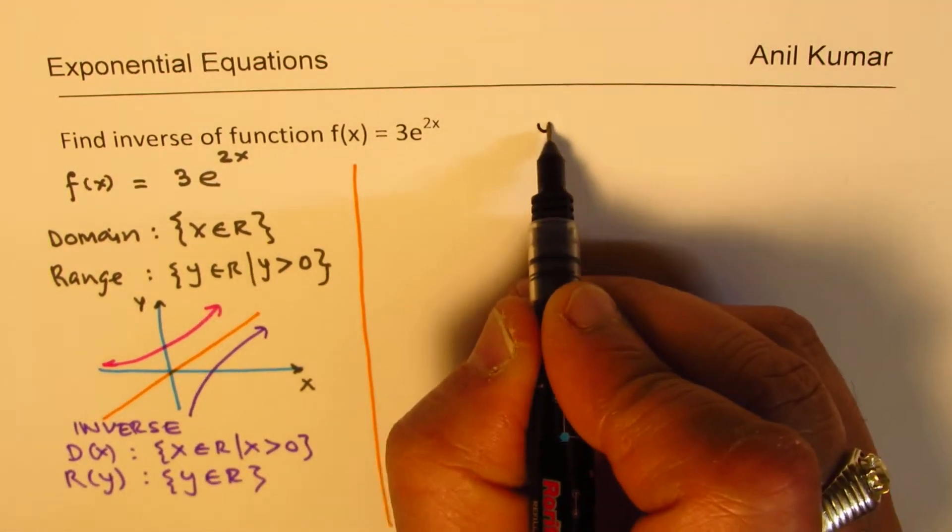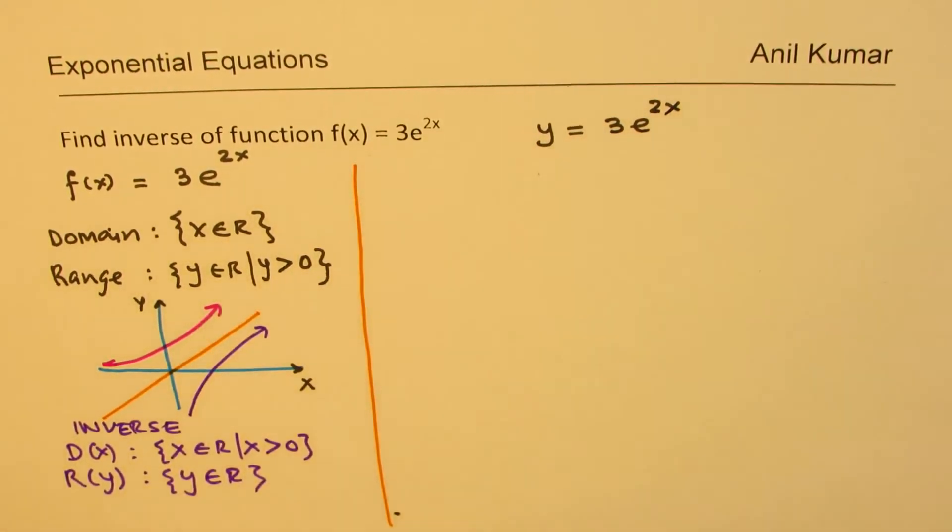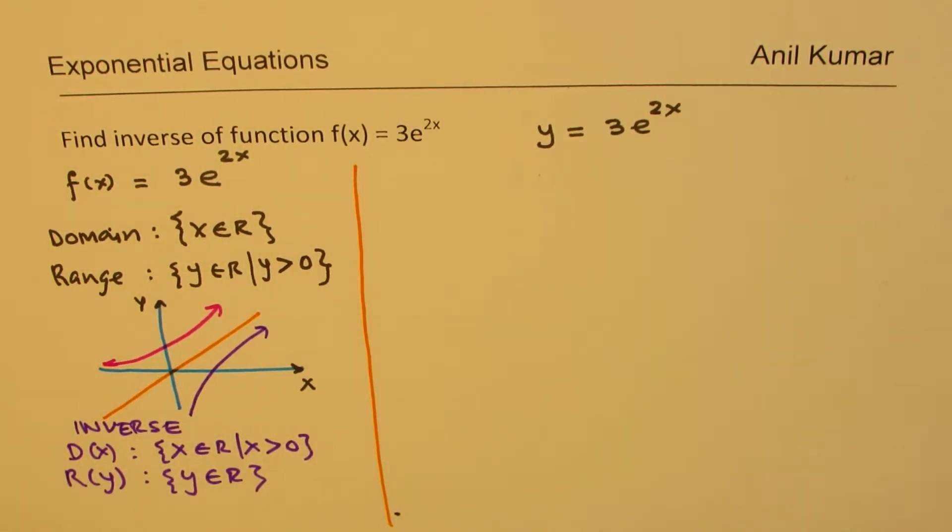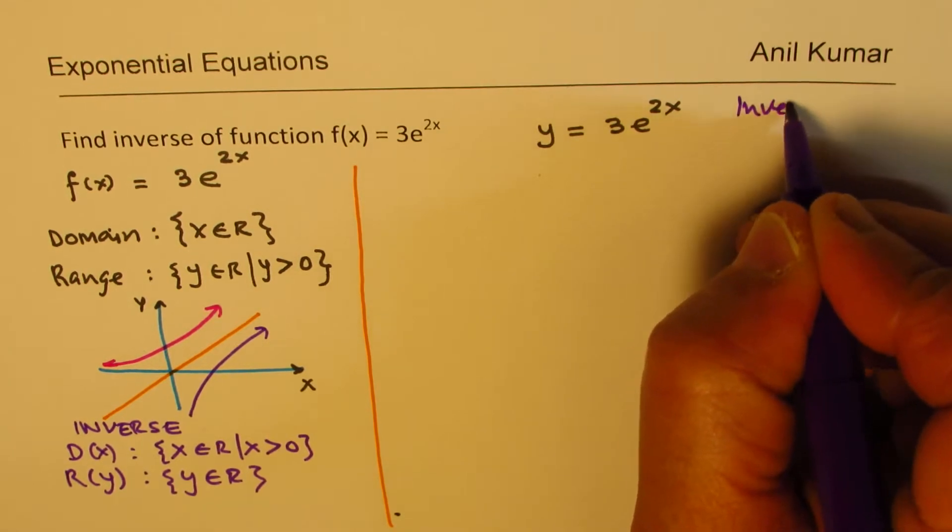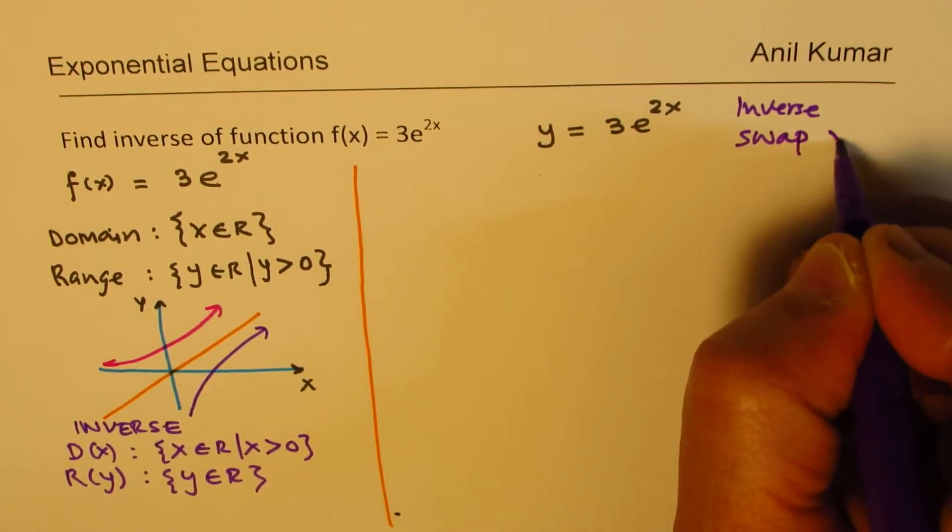We should actually talk about domain and range for a function, definitely, when we are talking about inverse of a function. Now, let's look into the process of finding the inverse. We could write this as 3e to the power of 2x. To find inverse, what should we do? We need to swap. So, to find inverse, first step is to swap x and y.